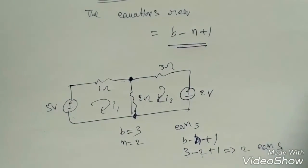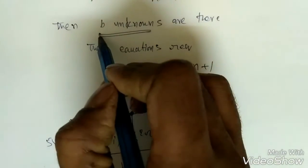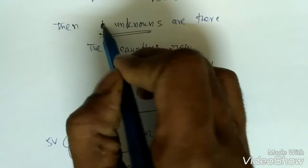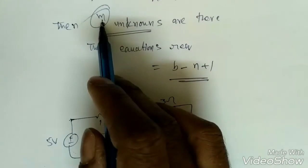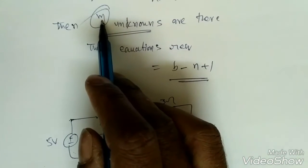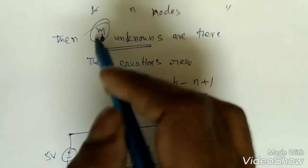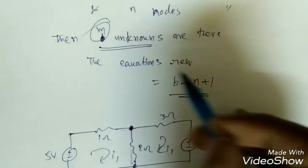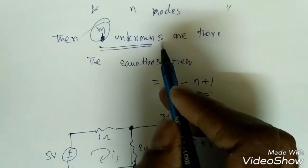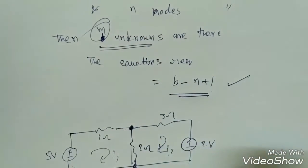The minimum number of equations required is b minus n plus 1. This tells us the number of mesh equations we need to solve for all unknown currents in the circuit. This formula is the foundation for systematic mesh analysis.